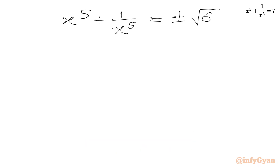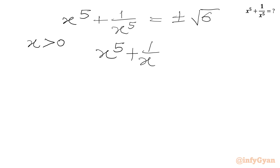At the beginning it was given that x is positive. Since we are raising to an odd power, x power 5 plus 1 over x power 5 must be positive. Therefore our answer is square root 6.